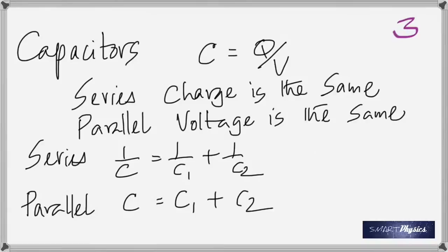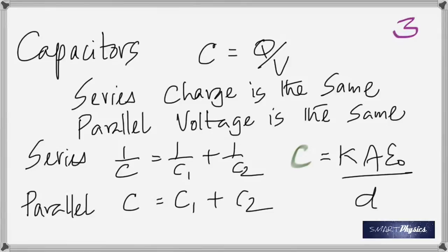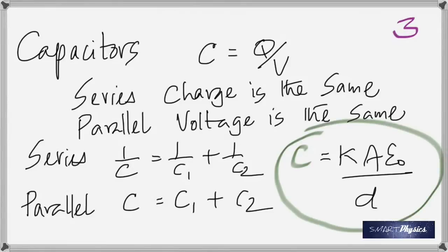For a parallel plate capacitor, the capacitance is C = Kε₀A/d, where K is the dielectric constant, A is the overlapping area of one plate, d is the distance between the plates, and ε₀ is 8.85 × 10⁻¹². These topics should be feeling more familiar — which means you've been studying.